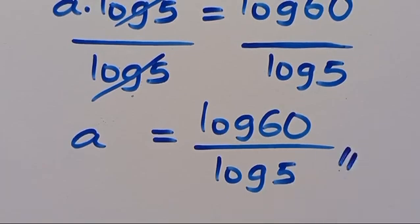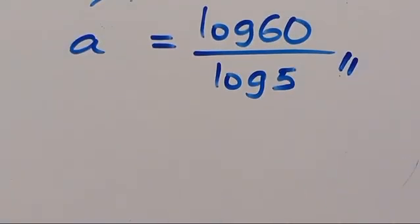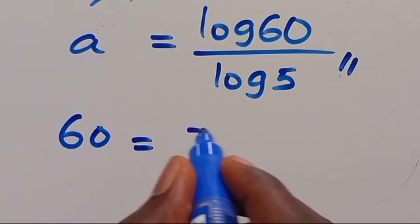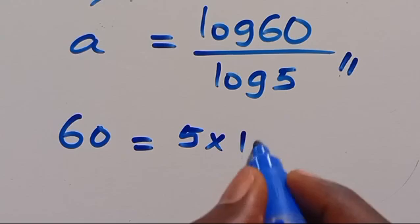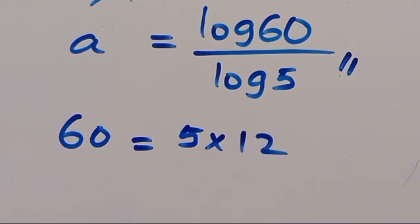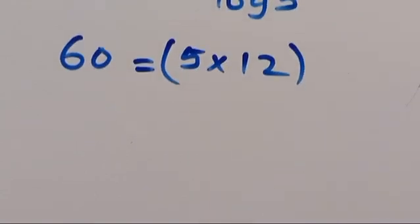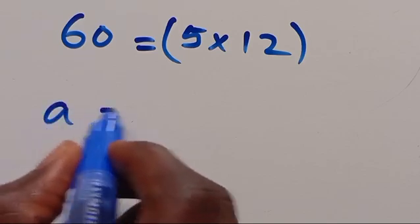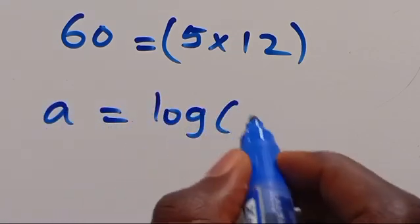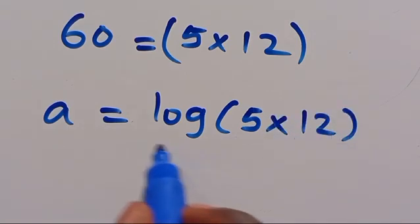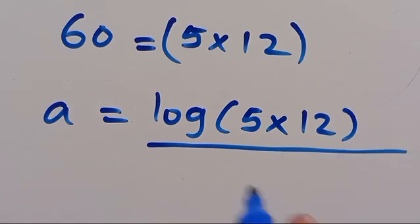So from here, this is the final answer for the value of A. But mind you, we can simplify this further. Note that we can have 60 equals 5 times 12. So when we substitute it here, we are going to have A equals log of 5 times 12, all in parentheses, divided by log 5.